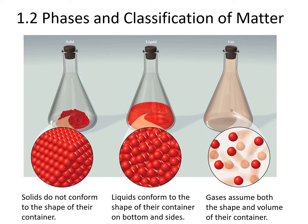In the macroscopic domain, we can see that solids have their own shape and volume. Liquids have their own volume, but they take the shape of their container on the sides and on the bottom, with a flat surface on top caused by gravity. Gases take both the shape and full volume of their container.